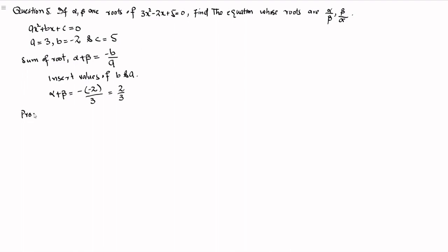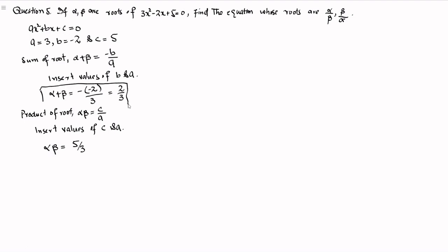Similarly, we know that the product of roots for the given equation — alpha and beta — is equal to c by a. Inserting the values of c and a, we get alpha times beta is equal to 5 by 3. This is the product of the roots of the given quadratic equation.